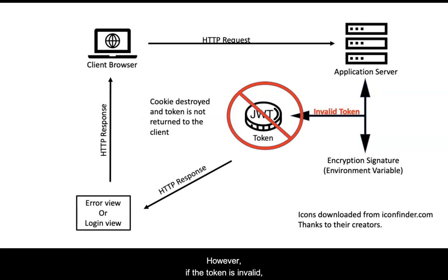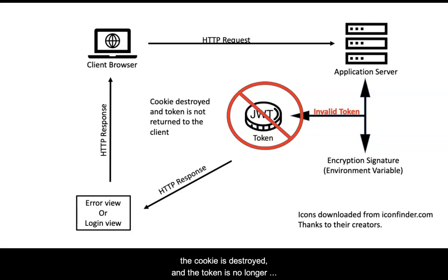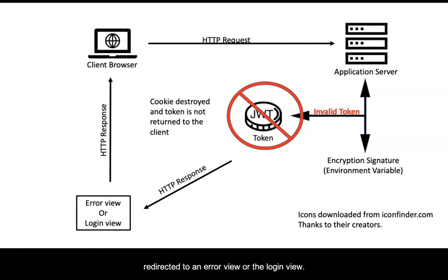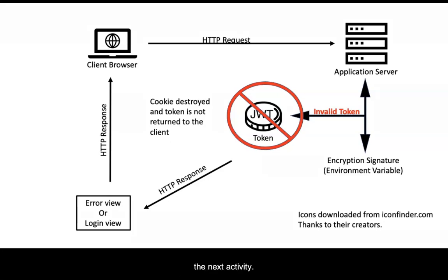However, if the token is invalid, meaning it has been tampered with or expired, the cookie is destroyed and the token is no longer forwarded to the client. The response is then typically redirected to an error view or the login view. This represents the login process to be implemented in the next activity.